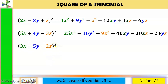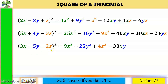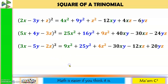Another one: quantity 3x squared is positive 9x squared. Negative 5y quantity squared is positive 25y squared. Negative 2z quantity squared is positive 4z squared. Let's get a pair: positive 3x times negative 5y is negative 15xy, times 2 is negative 30xy. Next pair: positive 3x times negative 2z is negative 6xz, times 2 is negative 12xz. Last pair: negative 5y times negative 2z is positive 10yz, times 2 is positive 20yz.